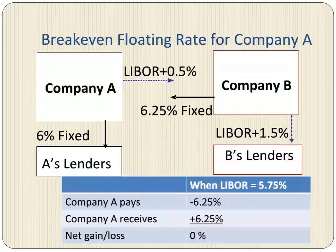Let's discuss a few issues that may arise from the deal. Company A is betting that interest rates would decline and Company B is betting on interest rates rising. If the rates move against one company, that company stands to incur a loss. When the LIBOR is 5.75%, Company A pays Company B 6.25% and also receives 6.25% from Company B. Therefore, at the LIBOR rate of 5.75%, Company A breaks even. If the rates rise above 5.75%, Company A would make payments at a higher rate to Company B and would incur a loss.